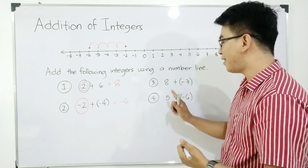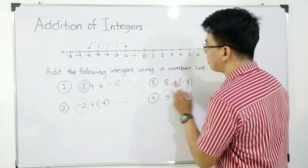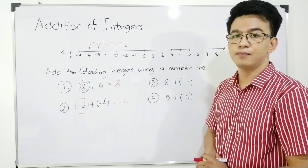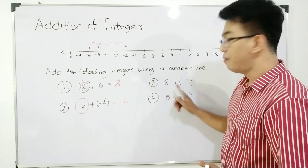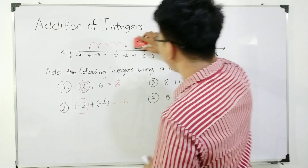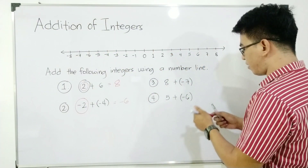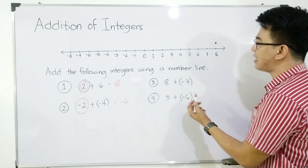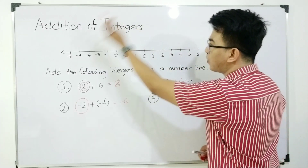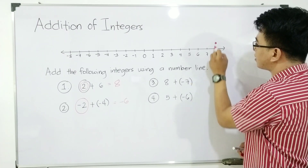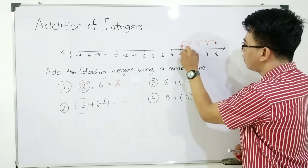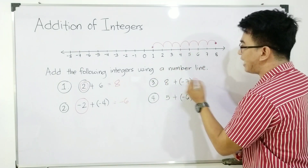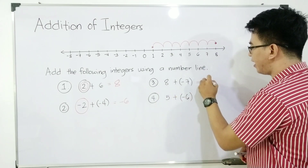Now let's have item number 3. You can pause the video if you want to try item number 3 before we continue. Let's continue — 8 plus negative 7. We will start at positive 8, and we will add negative 7. Our movement is from 8 going to the left. You will move 7 units: 1, 2, 3, 4, 5, 6, and 7. This is our end point, which is 1. The answer to 8 plus negative 7 is positive 1.